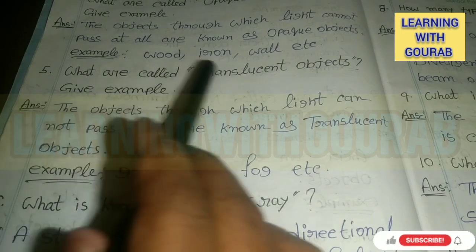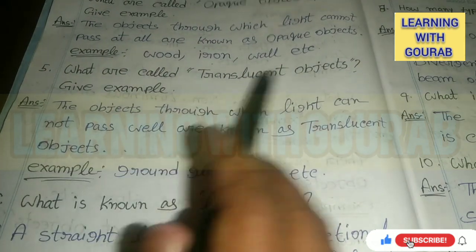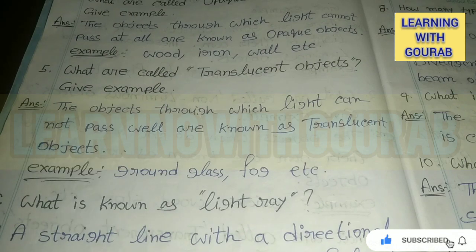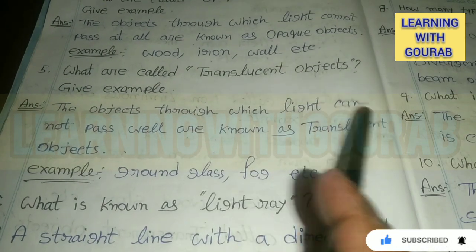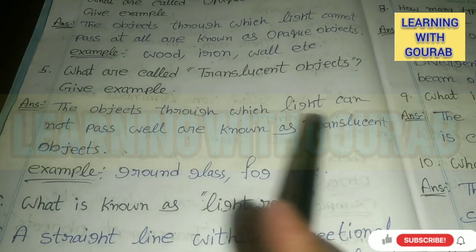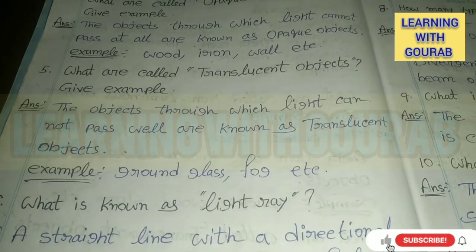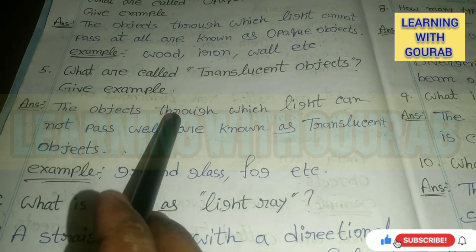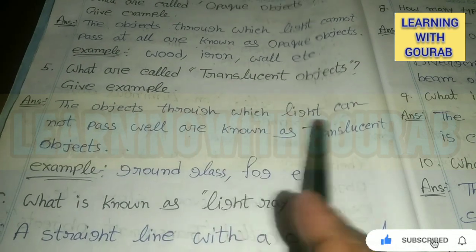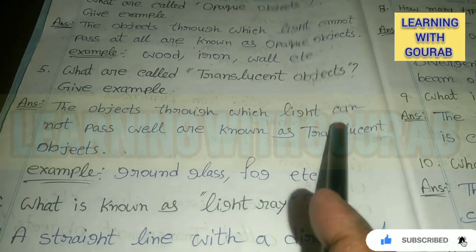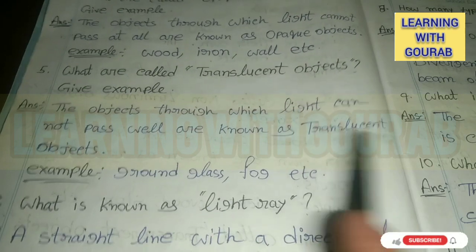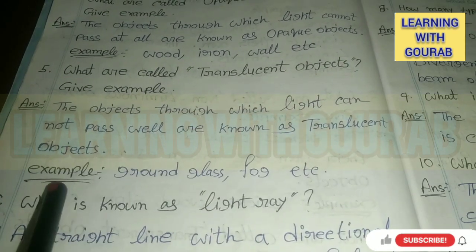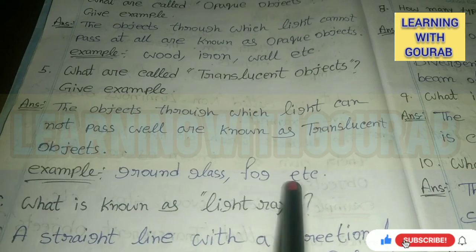Next question: What are called translucent objects? Give example. Answer: The objects through which light cannot pass well are known as translucent objects. Example: yellow glass, ground glass, fog, etc.